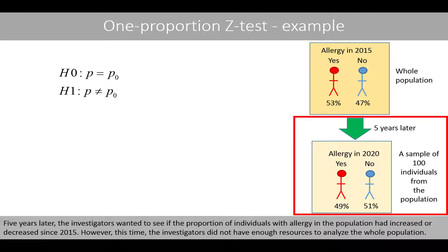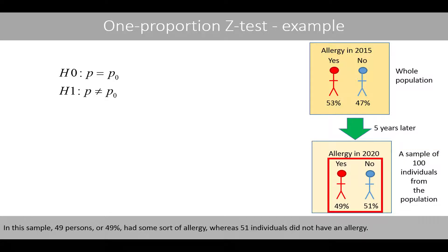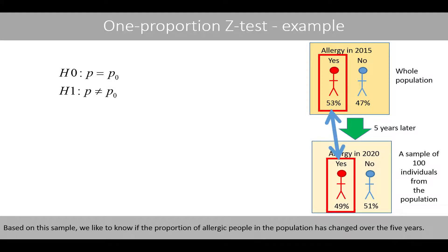Five years later, the investigators wanted to see if the proportion of individuals with allergy in the population had increased or decreased since 2015. However, this time the investigators did not have enough resources to analyze the whole population. Instead, they took a sample of 100 individuals, in which 49 persons, or 49%, had some sort of allergy, whereas 51 did not. Based on this sample, we would like to know if the proportion of allergic people in the population has changed over the five years.